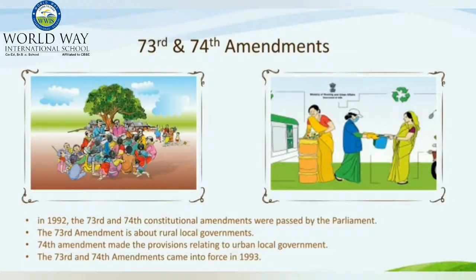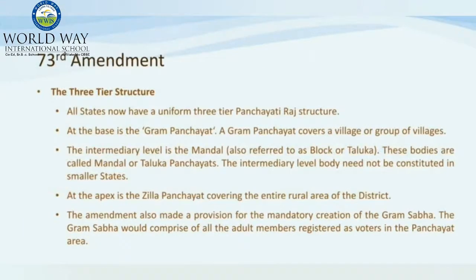When the constitution was prepared, the subject of local government was assigned to the states. In 1993, two constitutional amendment acts were passed to recognize local self-government at the grassroot level. The 73rd amendment made the following provisions: the reservation of seats for women, SCs, STs, and OBCs. Due to this reservation, a number of women have occupied even the position of Sarpanch and Adhyaksh. Hence, more than 80,000 women Sarpanch have been declared elected so far.